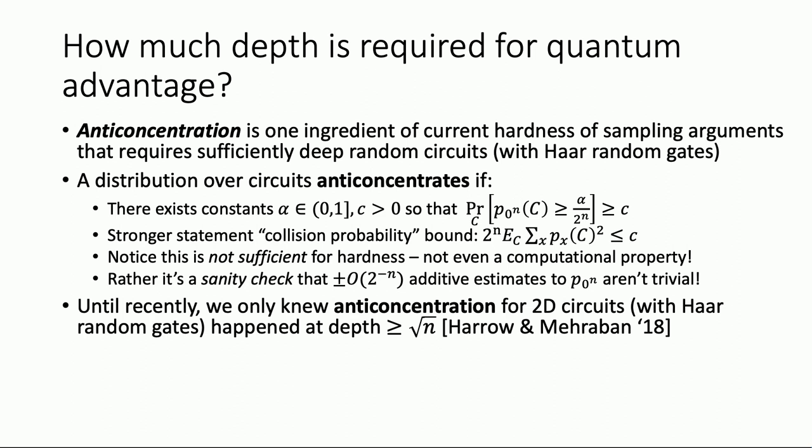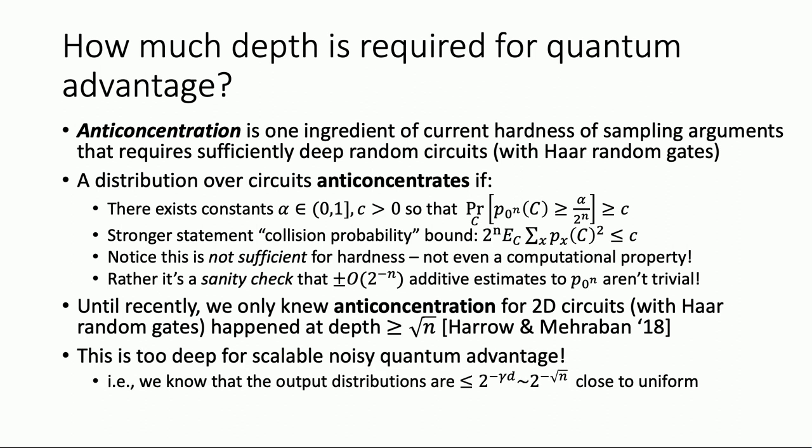Anti-concentration is just used as a sanity check to make sure that the additive errors we're talking about are non-trivial — that showing hardness of estimating random circuit output probability to within two to the minus N is not overwhelmed by the signal. Until recently, we only knew anti-concentration for 2D circuits at depth square root N. Before that — constant or log depth — we didn't know. It was conjectured that it didn't happen. So until very recently we thought we needed about square root N depth for anything interesting, because the theory of anti-concentration was tied to the theory of approximate 2-designs. With noise, at square root N depth you're two to the minus square root N close to uniform, leaving no room for scalable advantage.